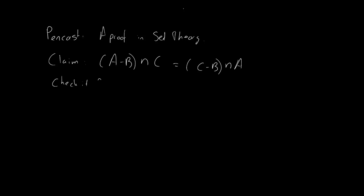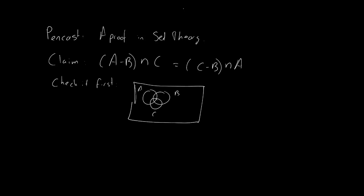My first tip: when you get a claim like this, you don't always know whether it's true or false. So the first thing you should do is check it out — make a Venn diagram and see what happens. A minus B is this section, and intersecting with C gives just this section. What about C minus B? C minus B intersected with A — that seems to be the same section. So the claim checks out.